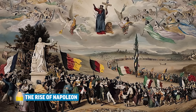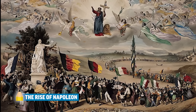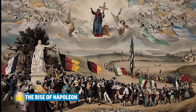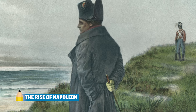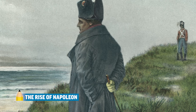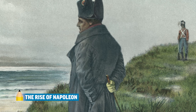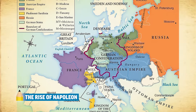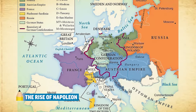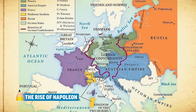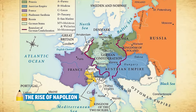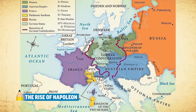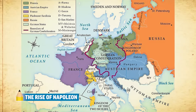His expansion ushers in some benefits in Europe, like the creation of civil codes in lands he conquers, and it also leads to the rise of nationalism in these places. After Napoleon is exiled a second time to Saint Helena, European leaders get together to restore the balance of power. Led by Metternich, this Congress of Vienna restores the Bourbon monarchy and strengthens countries that border France so that no one can ever conquer like Napoleon just did.